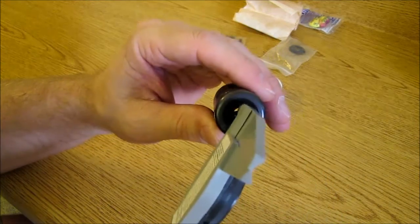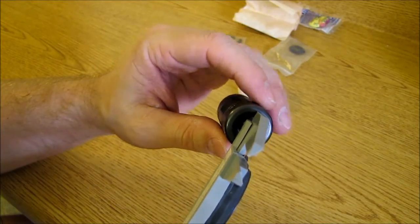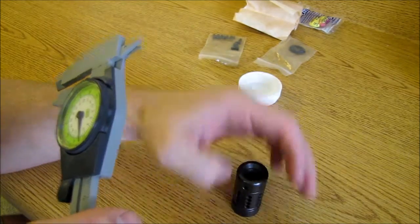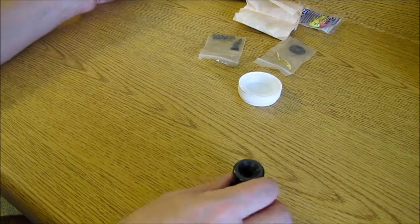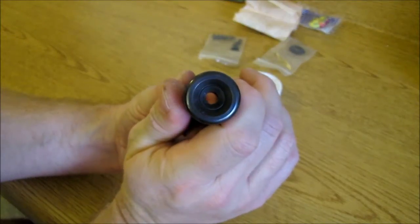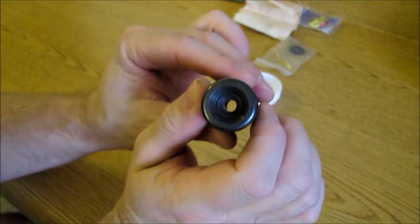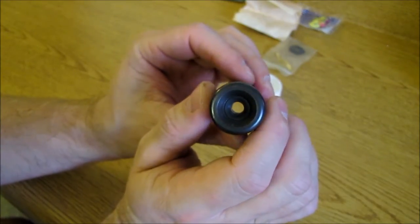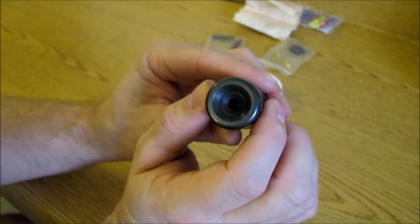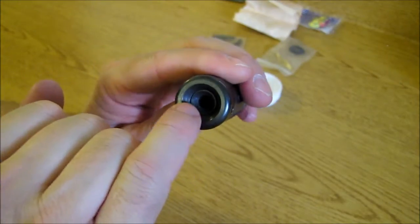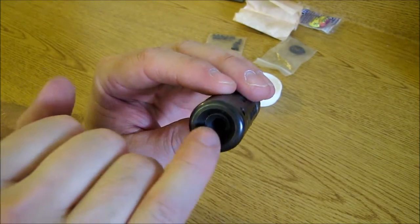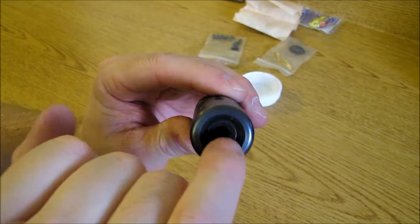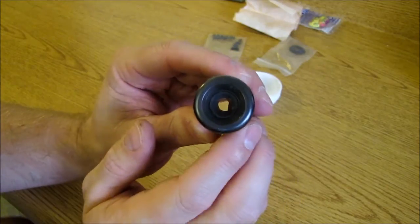The exit hole here at the muzzle is ten thousandths over. So you've got five thousandths on either side of the bullet. That is a tight bullet exit hole there. I had to measure it a couple times before I felt sure about shooting it. But as it turns out, there's zero strikes, zero effect of any rounds scraping or touching the exit.